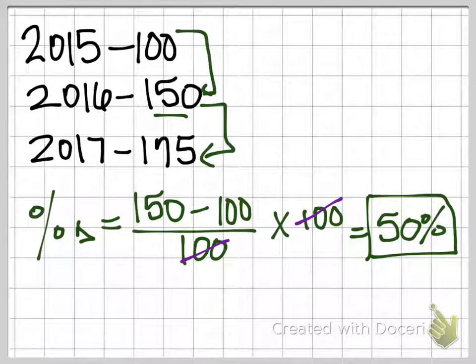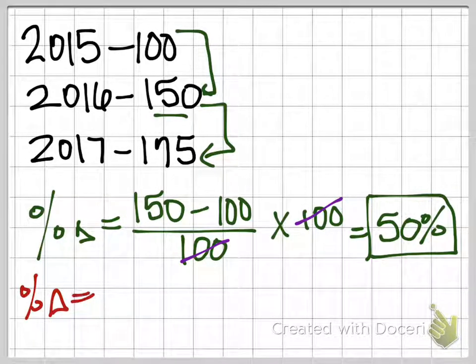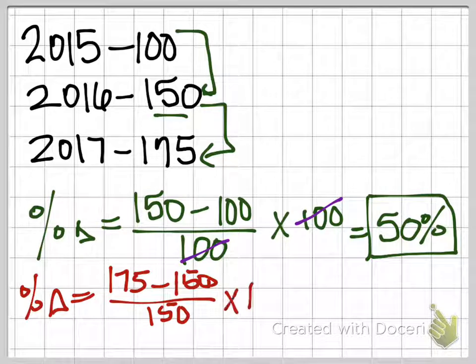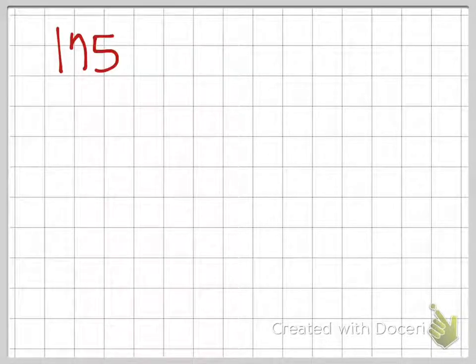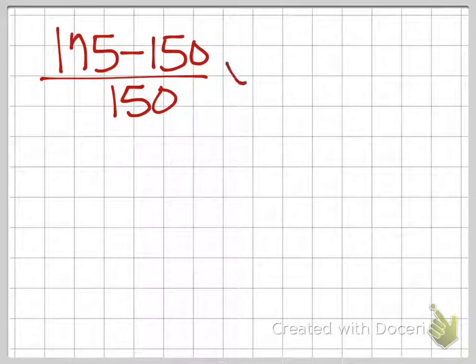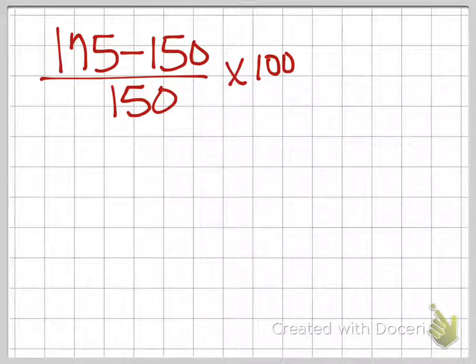All right, so this is different, then, from what we will see when we calculate 2016 to 2017. Math is a little bit more here. So now we're at 175. Last year was 150. We're going to divide by that 150 and multiply times 100. So 175 minus 150. And actually, I'm going to give us a new screen here so we can see this clear.